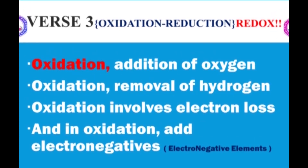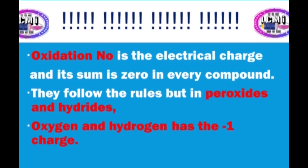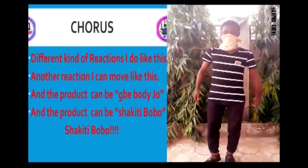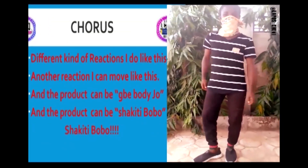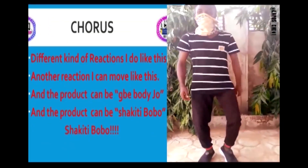Oxidation-reduction (redox) reactions involve transferring electrons from donor to receptor. Oxidation is the addition of oxygen or removal of hydrogen; oxidation involves electron loss. In oxidation, add electronegatives. Oxidation number is the electrical charge, and the sum is zero in every compound. They follow the rules, but in peroxides and hydrates, oxygen and hydrogen carry a minus one charge.